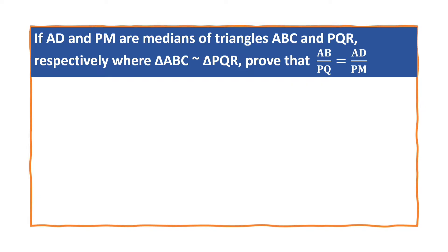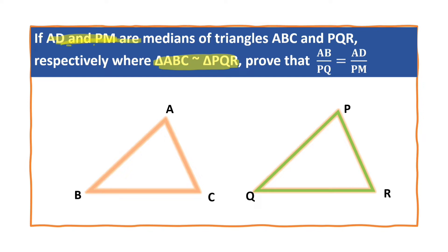We are given two similar triangles: triangle ABC and triangle PQR, with medians AD and PM. AD is the median of triangle ABC and PM is the median of triangle PQR. We have to prove AB by PQ equals AD by PM.